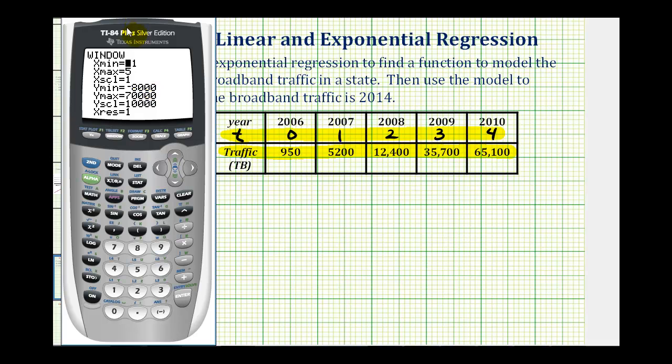To turn the scatter plot on, as long as the data is in L1 and L2, we can press y equals, press the up arrow, press enter on plot one, and then back down. Notice how it's now highlighted, which means the scatter plot is turned on. So if we press graph, here's our scatter plot.